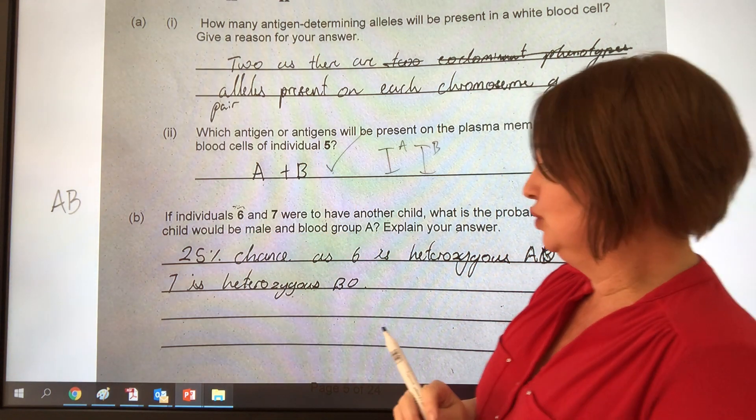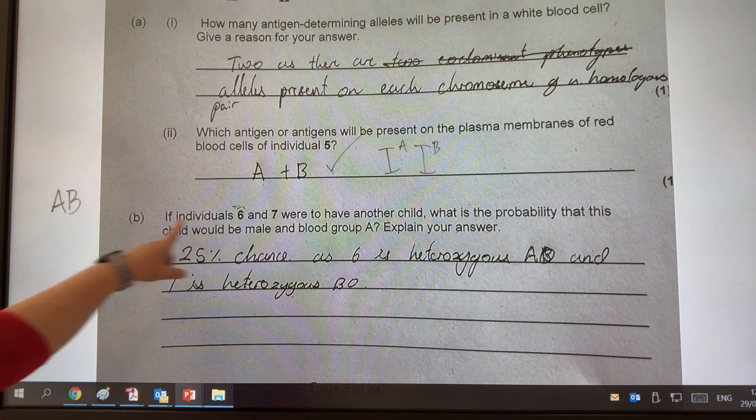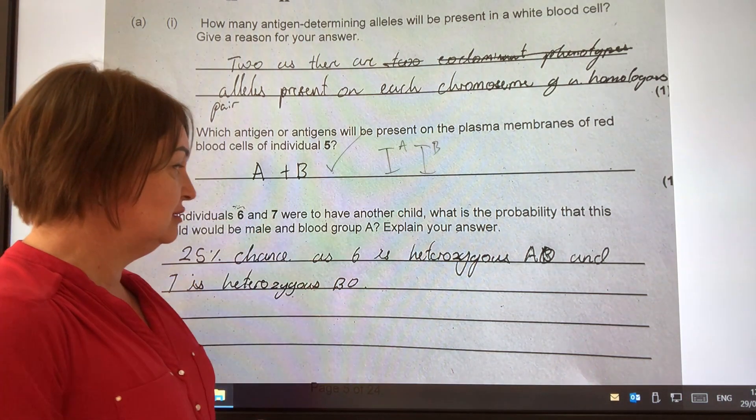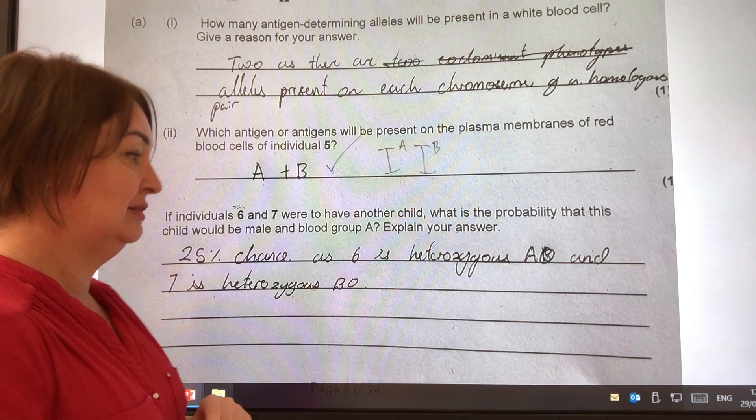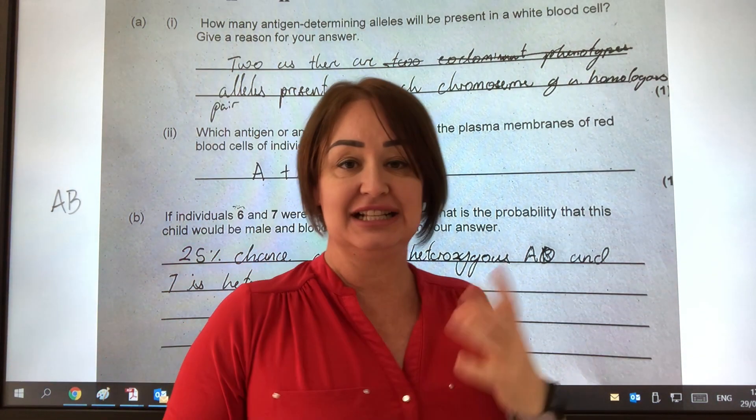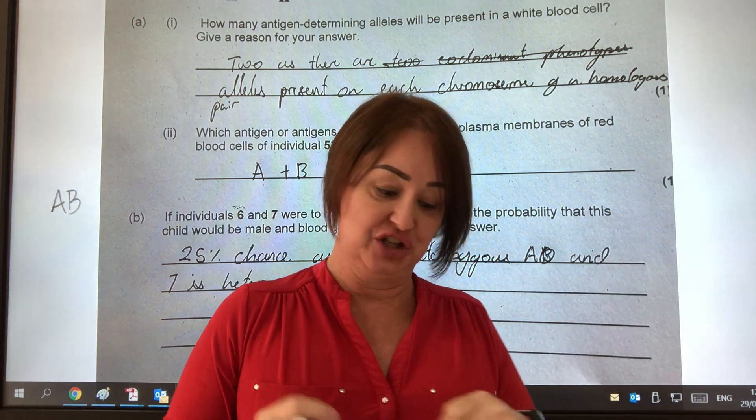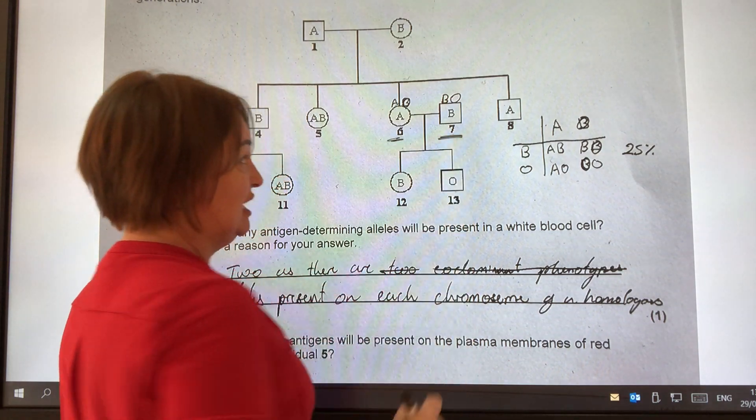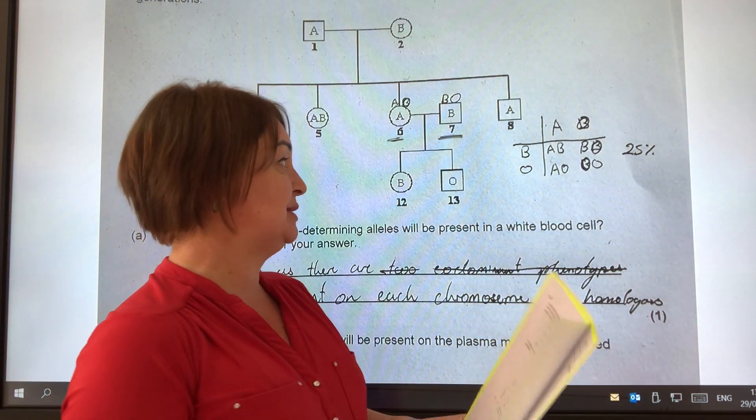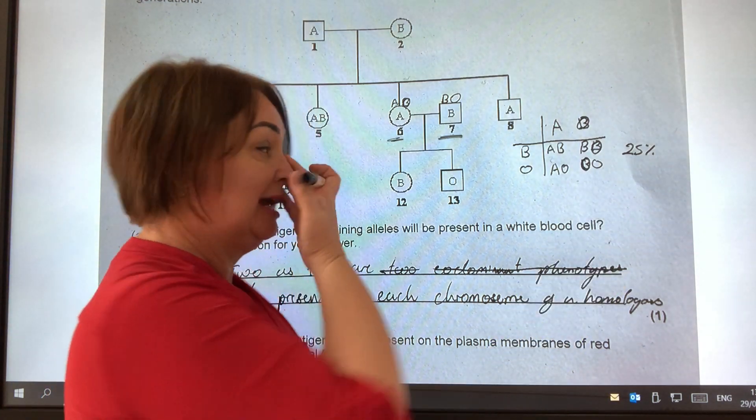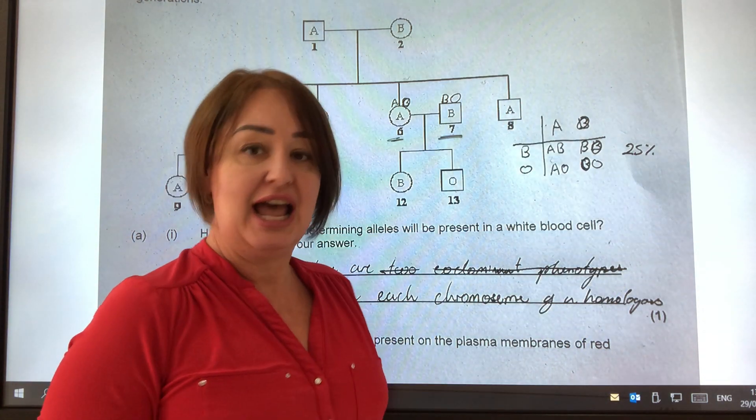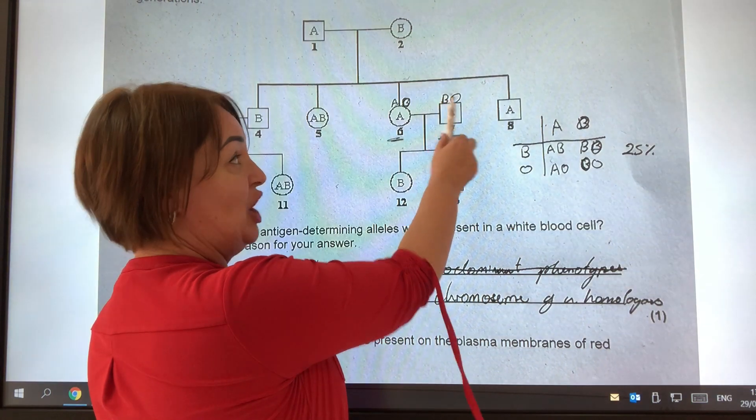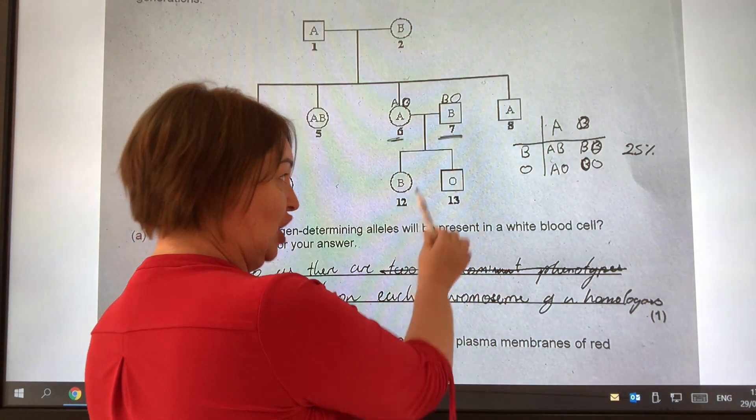Now this next question was really quite good because it said, if individuals six and seven were to have another child, what is the probability the child would be male and blood group A? Explain your answer. Again, it's asking for two things. It's asking for a probability and an explanation. And we're looking at individual six and we're looking at individual seven. Now there were three marks for this.